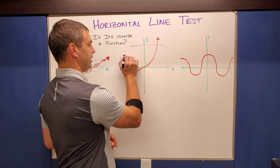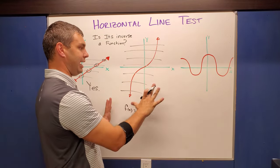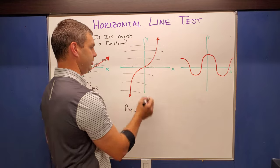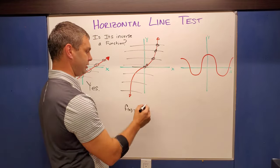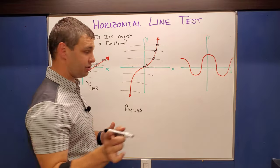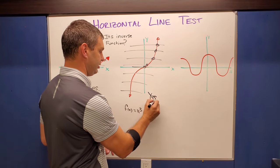Same thing. If I draw several horizontal lines every single time, no matter where it's at on here, even at zero, it's only hitting exactly once. So every one of those horizontal line hits once. Therefore, its inverse is also a function. So this one is also a yes.